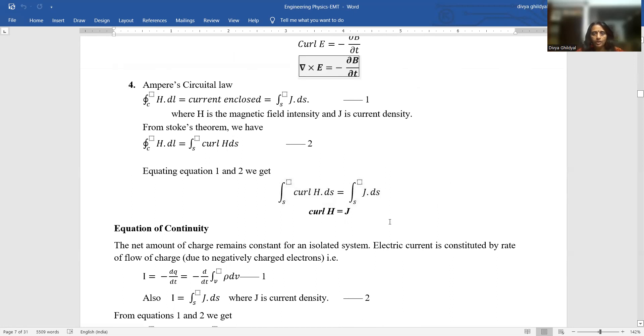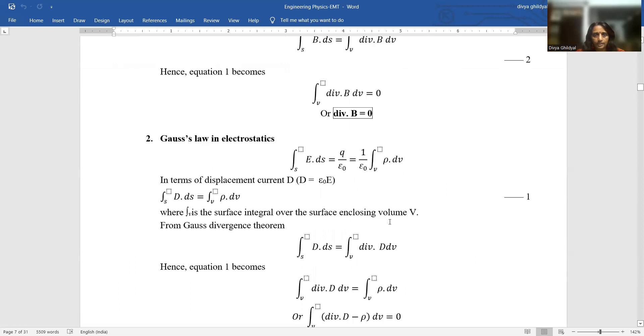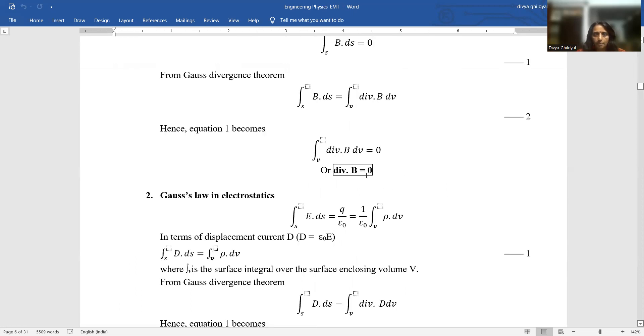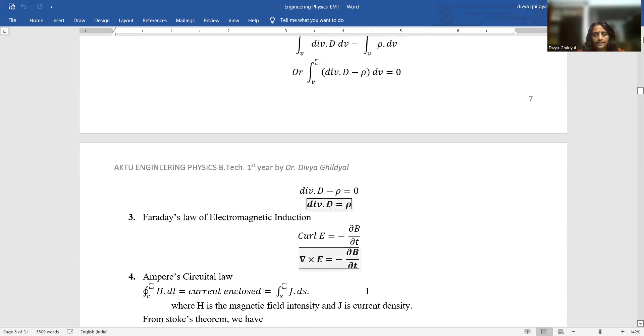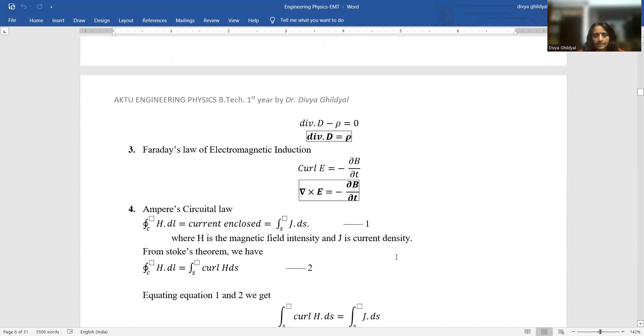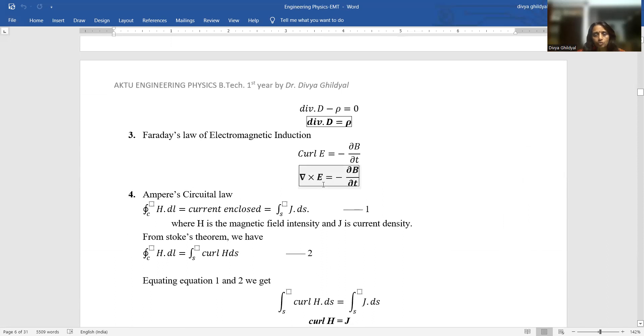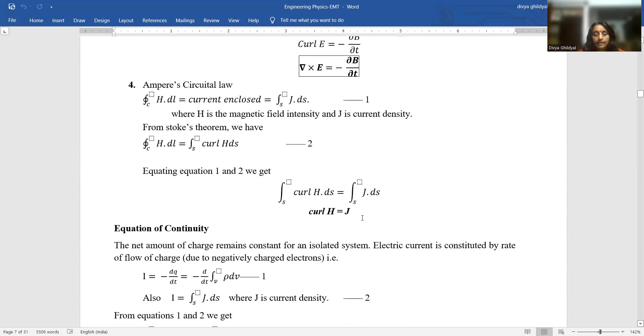Now students, these four equations - I will repeat it once again for you. Divergence B equal to zero - magnetic lines of force are closed curves. They start from the north pole and end in the south pole and inside the magnet they are continuous, so they form a continuous loop. Gauss law in electrostatics: divergence D equal to rho. Faraday's law of electromagnetic induction: del cross E equal to minus del B by del T. That means changing electric field gives rise to changing magnetic field in the opposite direction. That is why this negative sign. And curl dot H equal to J. These four equations are your basic equations of EMT.